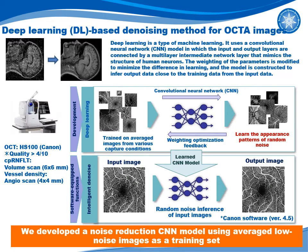We investigated the usefulness of AI-assisted image denoising in glaucoma. This method of noise reduction used a training set of average images taken with various shooting conditions, so the model can learn the appearance pattern of random noise. We used the deep learning noise reduction CNN model installed in Canon HS100, developed using noise-free average images as training data.